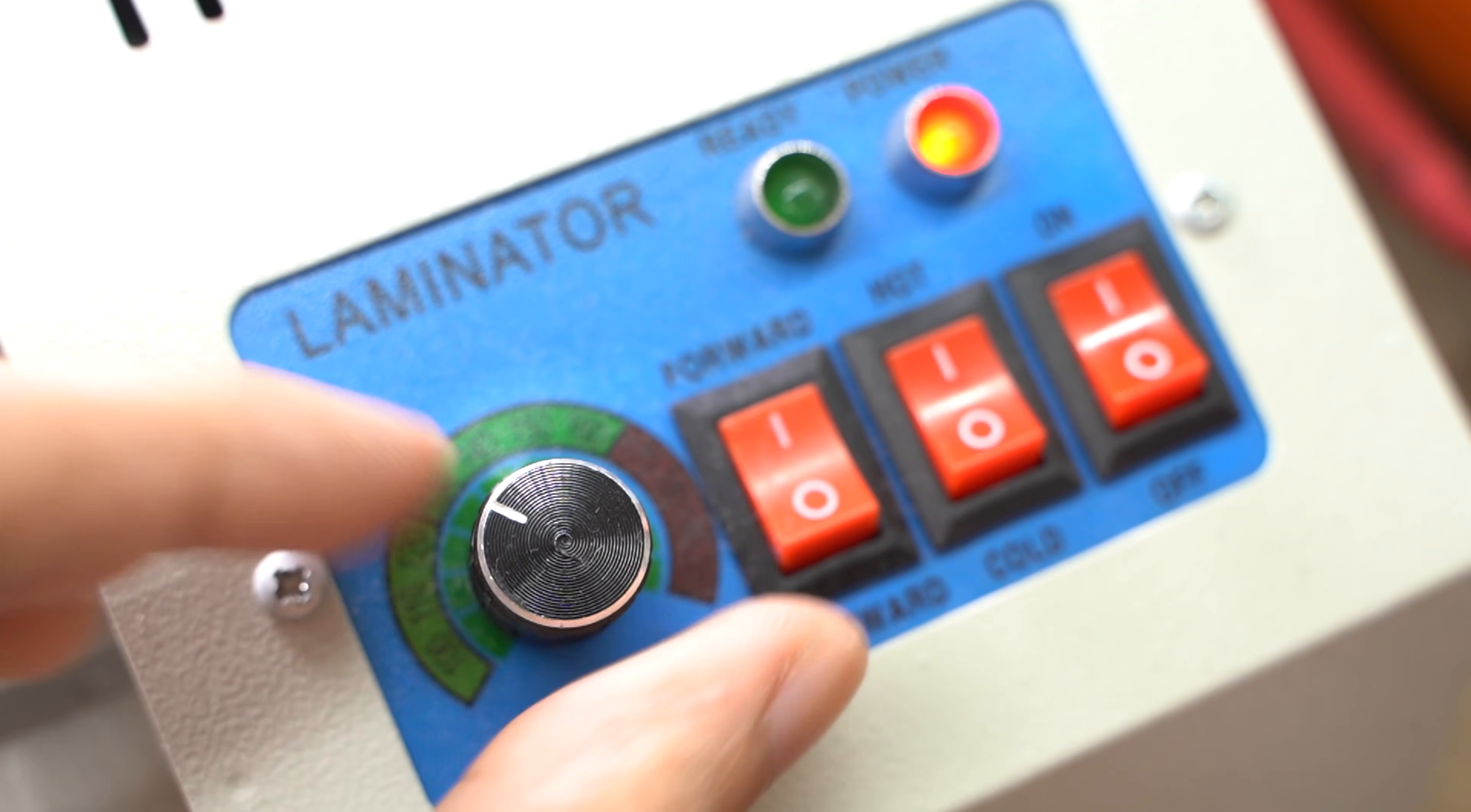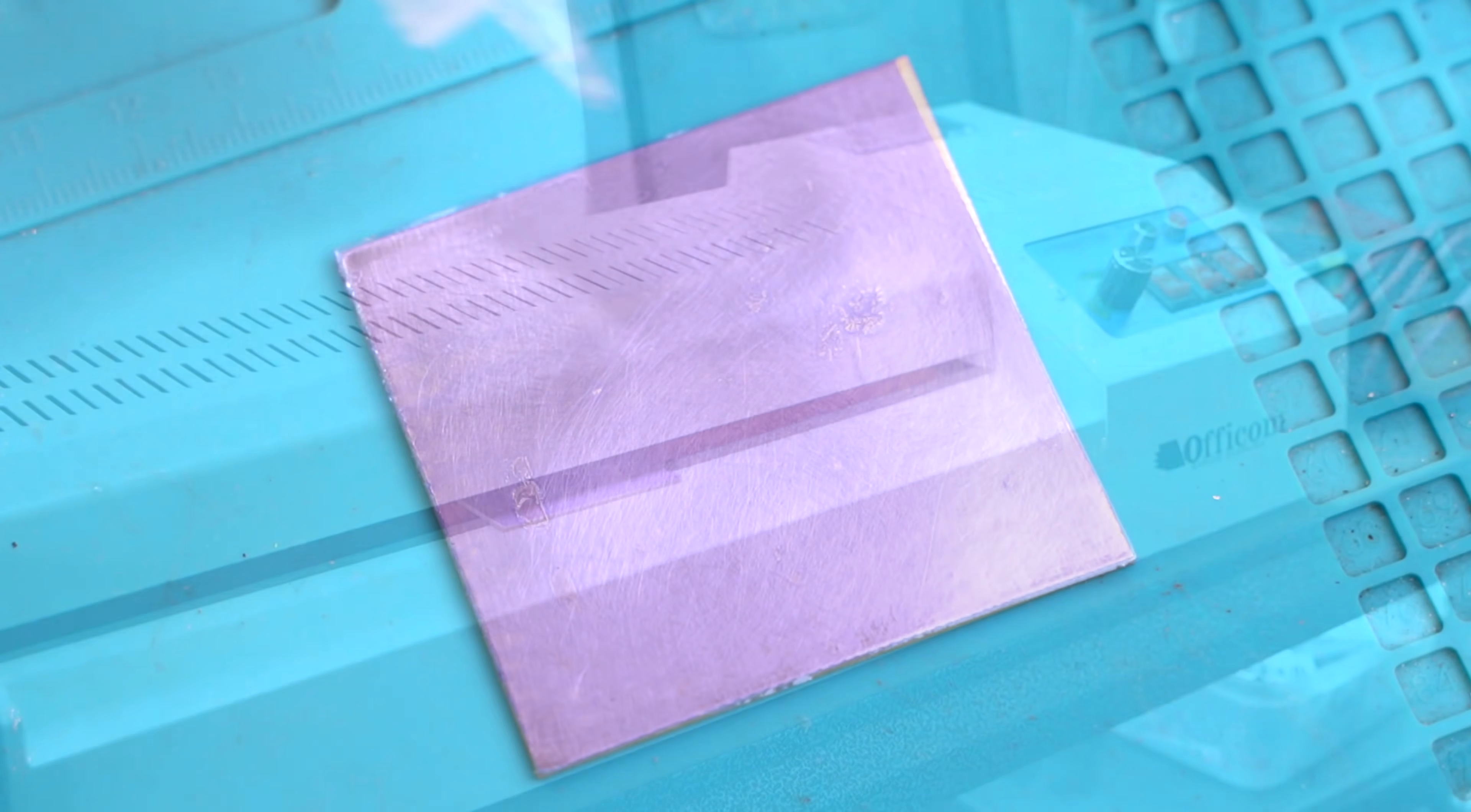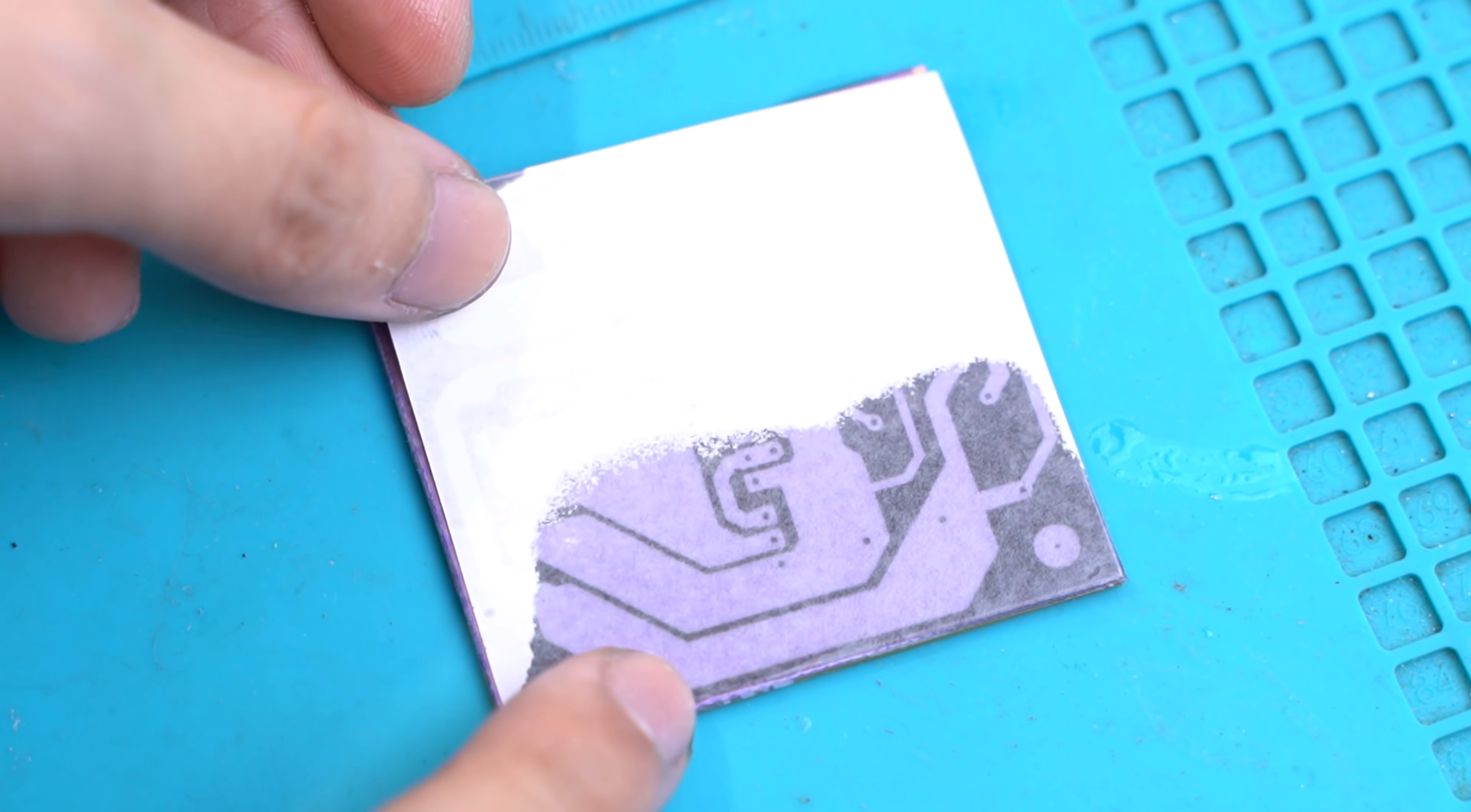A laminating machine, on the other hand, does a perfect job compared to the common iron. If you didn't print on a transparency sheet, you would have to apply baby oil on your board to make your paper translucent.